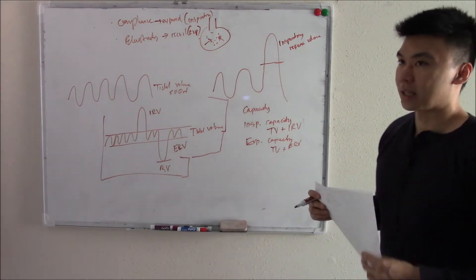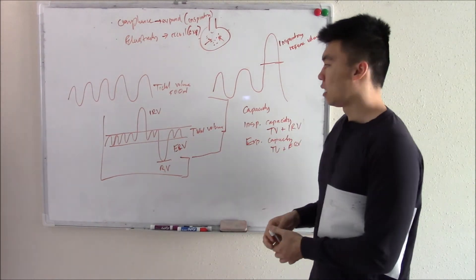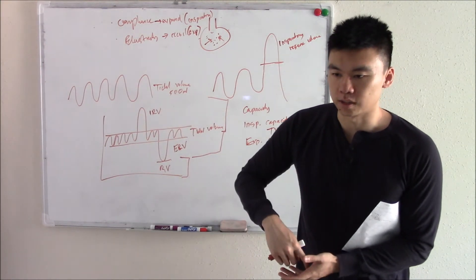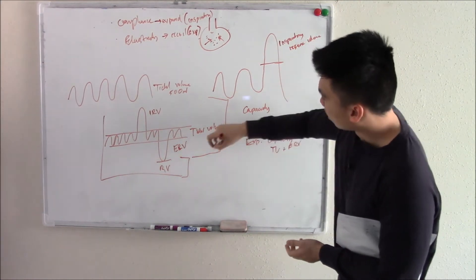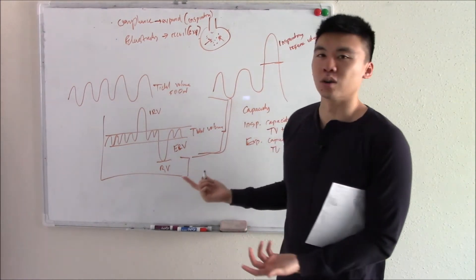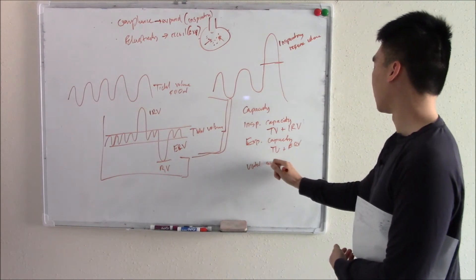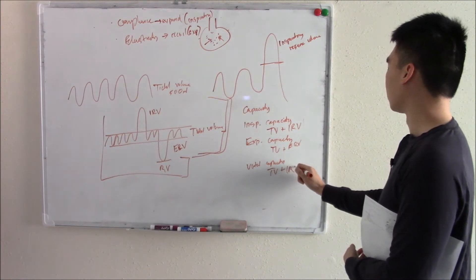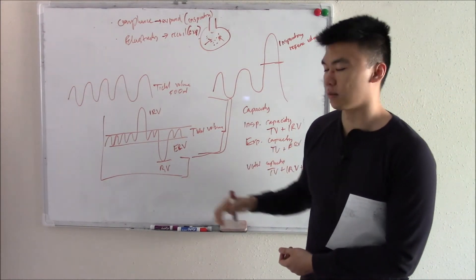Then we have something called vital capacity. What is vital to us in our day-to-day living? We need to be able to take deep breaths in and deep breaths out. Residual volume we can't really control — we don't even notice it's there, so it's not vital to us. Vital capacity is tidal volume plus inspiratory reserve volume plus expiratory reserve volume — the things that are vital to us. We're not including residual volume.